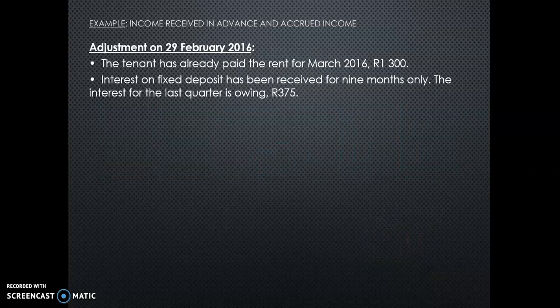The tenant has already paid the rent for March 2016 — that is 1,300. Our financial year ends on 29 February 2016. So if you draw a timeline, you will clearly see that March is in the next year. Interest on fixed deposit was received for nine months only — the interest for the last quarter is owing: 375. It is important that you know there are four quarters in a year. They give you the amount here, but you must be able to calculate it based on the information they give you.